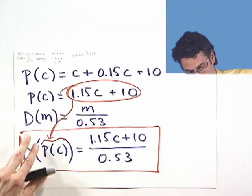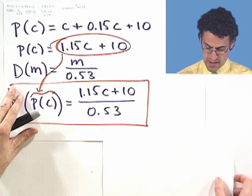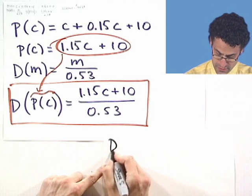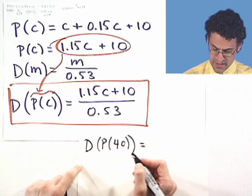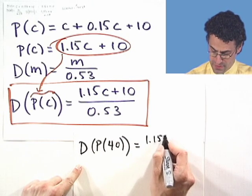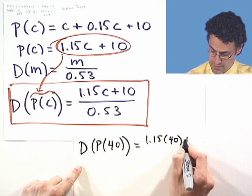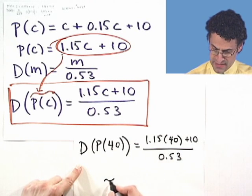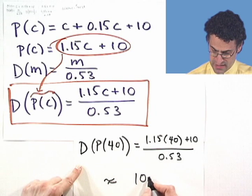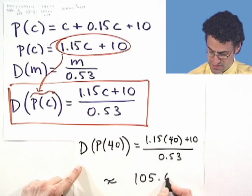So that equals, yes, I know. So it's going to equal 1.15 times 40 plus 10 all over 0.53. And a calculator will immediately tell us that that's going to work out to be $105.66.